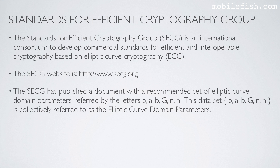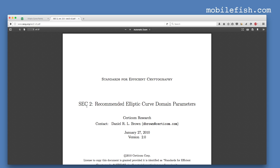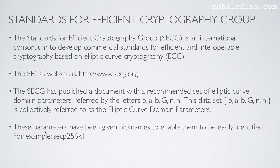The SECG has published a document with a recommended set of elliptic curve domain parameters referred to by the letters P, A, B, G, N, N, and H. This dataset is collectively referred to as the elliptic curve domain parameters. These parameters have been given nicknames to enable them to be easily identified.